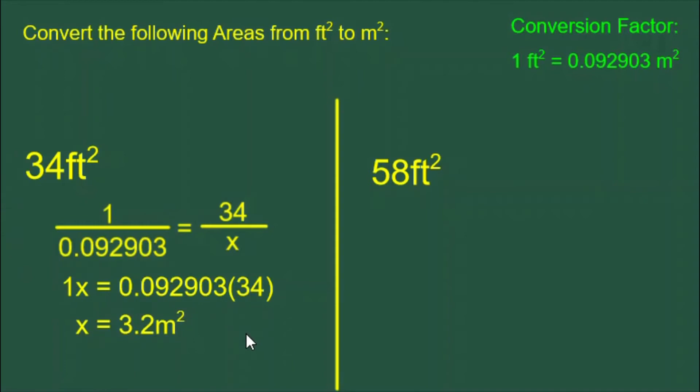And when we multiply 0.092903 by 34, we get 3.2. This value is rounded. Don't forget to apply the unit of measure, meters squared, to your answer.